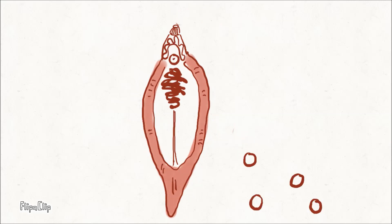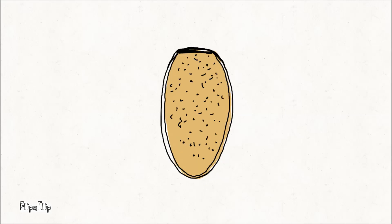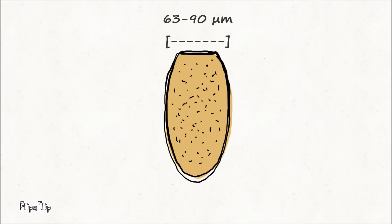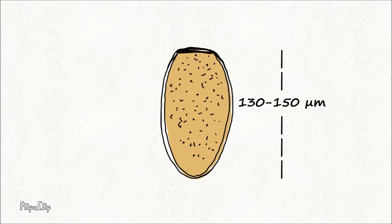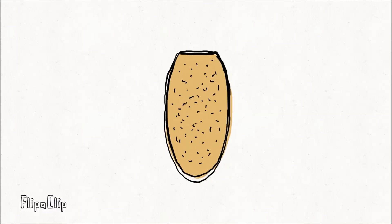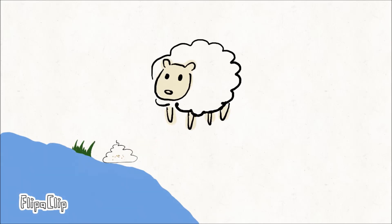This is an unembryonated egg. At this stage, the egg doesn't develop to have an embryo in it yet. The size of an egg is about 63–90 micrometers in width and 130–150 micrometers in length. It has an oval shape with yellow-brown color and thin shell. The egg has an open lid on one end called the operculum. This egg can be passed by infected humans or other mammals in their feces.